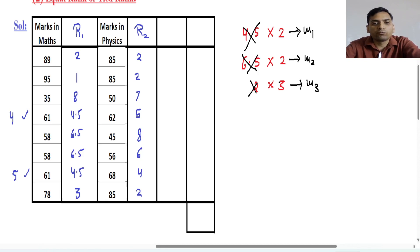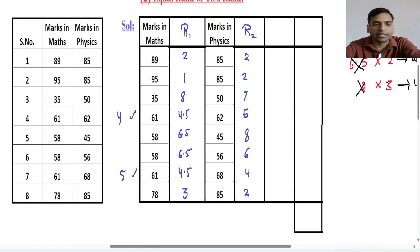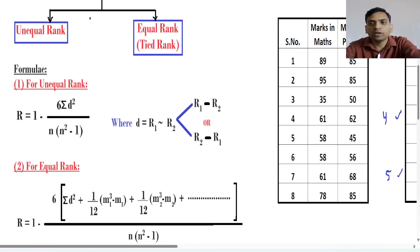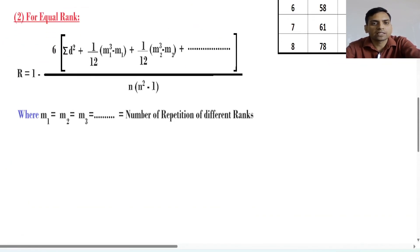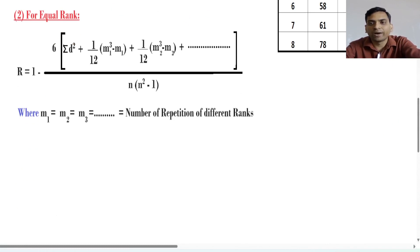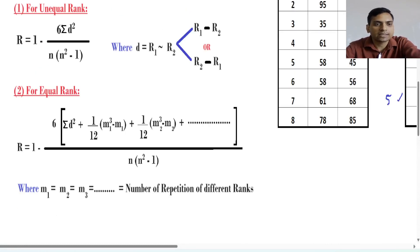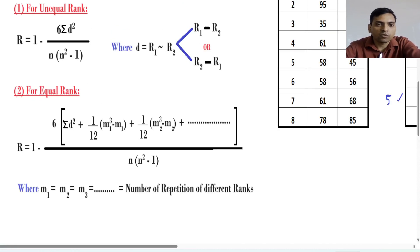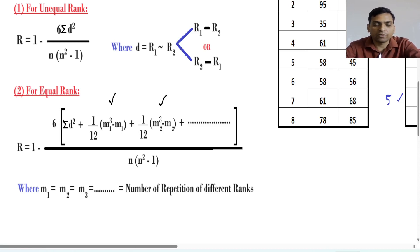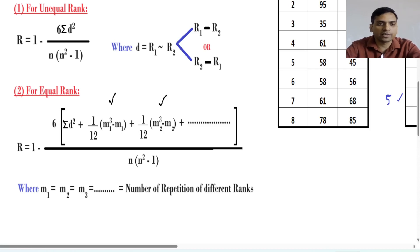Now we will see the formula for equal rank. The M values represent the repetitions of different ranks. The formula is: R = 1 − 6 × [Σd² + (1/12)(M1³ − M1) + (1/12)(M2³ − M2) + ...] divided by n(n² − 1). Just like the standard formula, Σd² is in the numerator, and the denominator part is the same. We include additional correction terms for each M. In our case we have 3 M values, so we include three such terms.